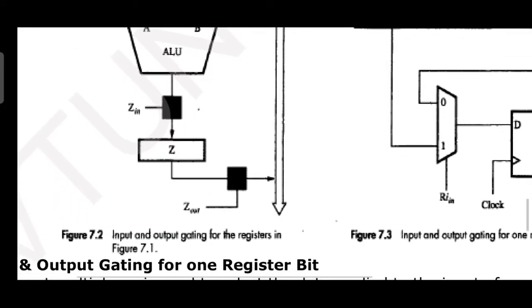So input and output gating. It is called as input and output gating. Very simple to understand. There is an input gate and there is an output gate. The gates are nothing but switches. If you activate a particular switch, necessary action will be taken. You can activate either input switch or output switch as per your requirement. If input switch is activated, register will take input from bus. If output switch is activated, register will give the output onto the bus. Register will place the data onto the bus.